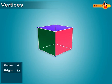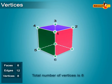Vertices: A vertex is a point where two or more straight lines meet. It has 8 vertices.